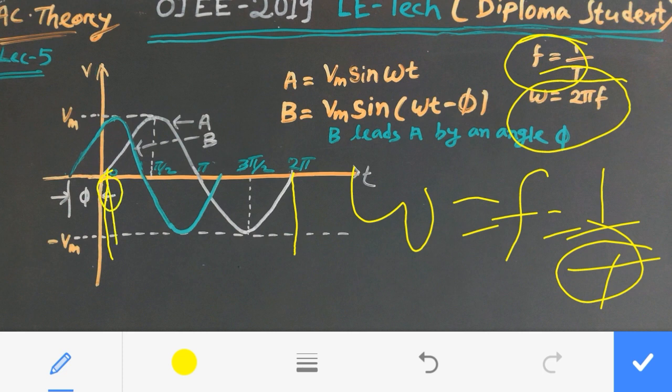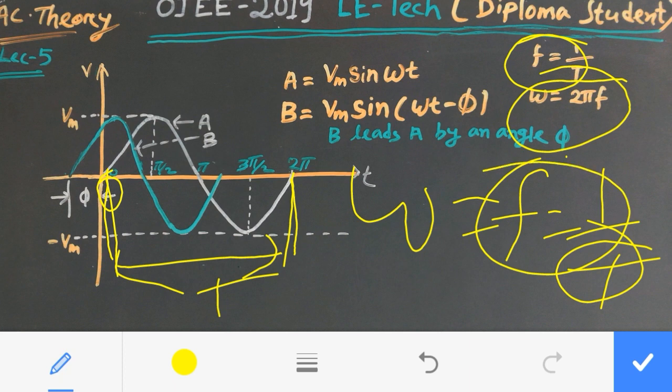Where this T is the time taken to complete one cycle. This is the time period. To complete one cycle, the time taken is called time period. The reciprocal of this time period is nothing but the frequency.